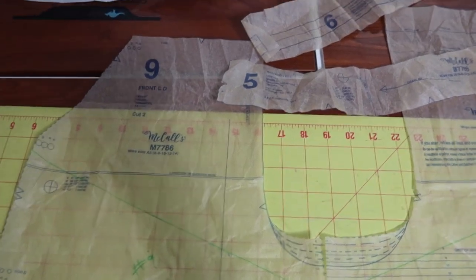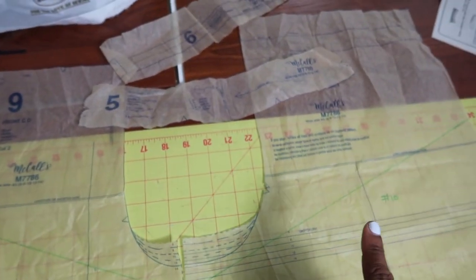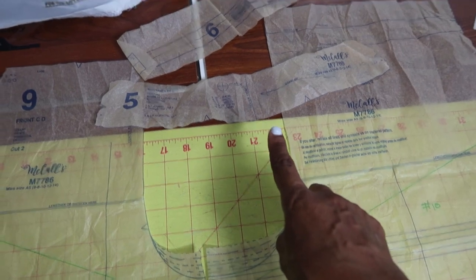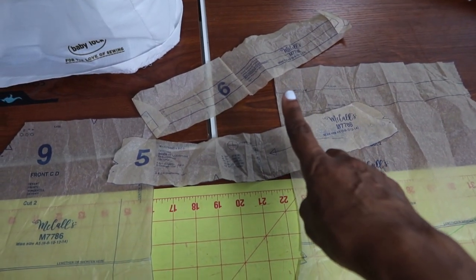For this project I will be using the front piece, the back piece, and the waistband piece, and then this is the elastic guide.